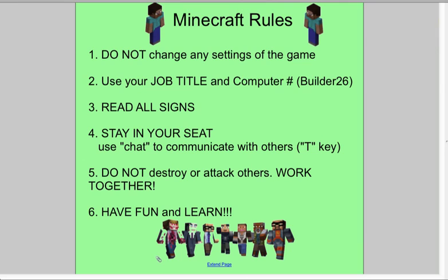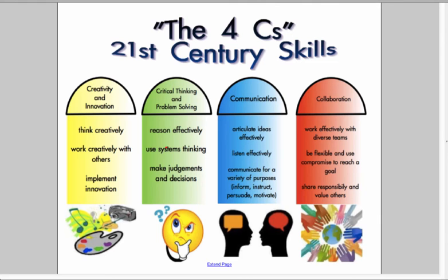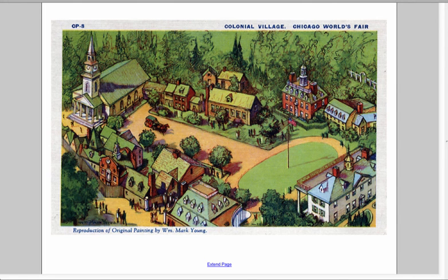We always go through our rules of Minecraft. Students don't change any settings. Their title is now Builder, Farmer, or Craftsman, so we can see what they're supposed to be doing as well as their number. We talk about no griefing — rule number five. We talk about what 21st century skills they'll be using. Then we looked at a couple of snapshots of colonies.